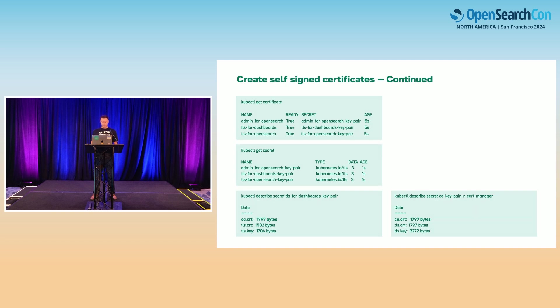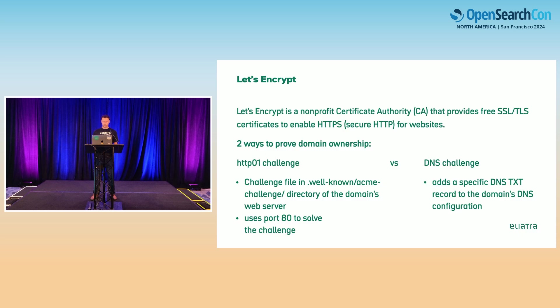Once all that is running, here's an example of what the certificates look like once they're created. You will have your TLS secrets, which have three files each: the CA cert, the TLS cert, and the TLS key. The CA cert is the one we created originally, which is why the byte sizes match up. So those are the self-signed certificates — they're not trusted by anybody.